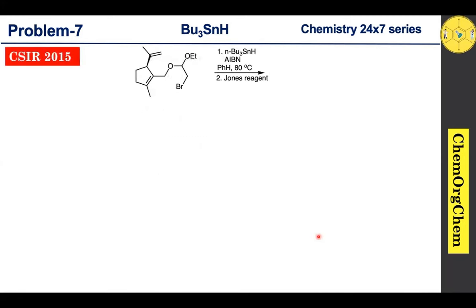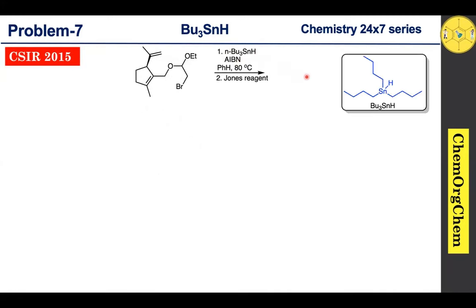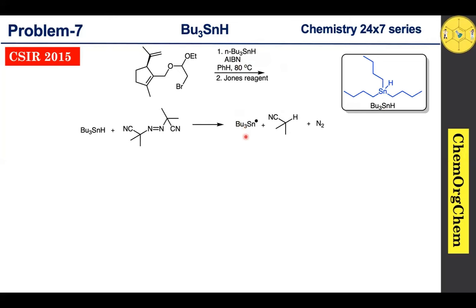The first reaction condition is the use of tributyltin hydride. We have already discussed tributyltin hydride in three parts — their preparation, properties, and application. If anyone missed that, don't worry, you can find the link in the description box. Tributyltin hydride when reacted with AIBN readily produces a tributyltin radical.